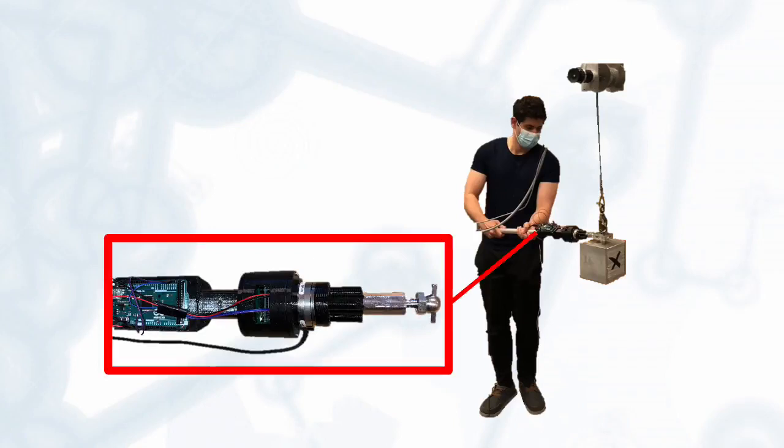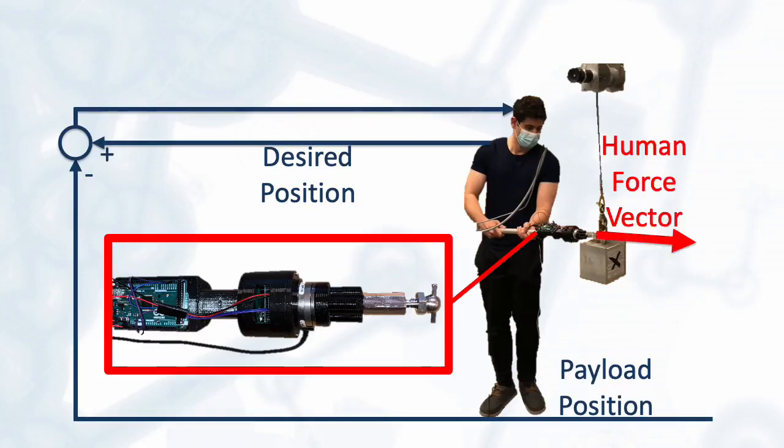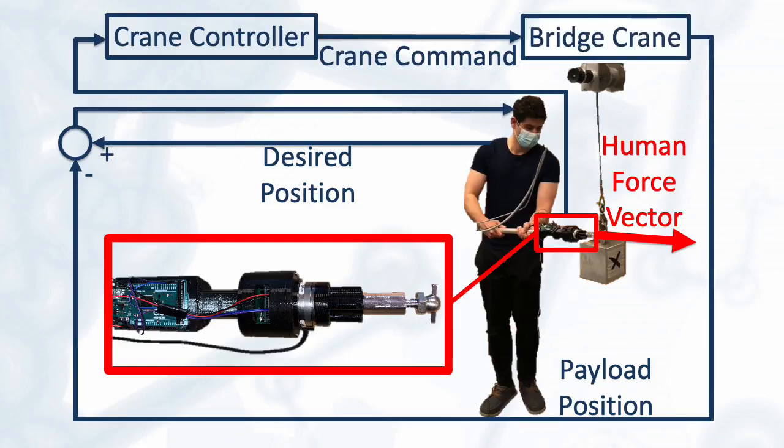This system works as follows. Using their knowledge of the desired payload position, actual payload position, and the error between the two, the human operator uses the instrumented push-pull device to apply a force to the payload in the desired direction of travel. This force is read by the sensors in our device and communicated to the crane controller, which uses this information to generate an appropriate command for the bridge crane. The resulting command is then propagated through the bridge crane dynamics to produce a new payload position, and the process is repeated until the desired position is achieved.